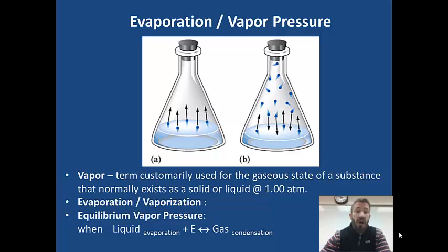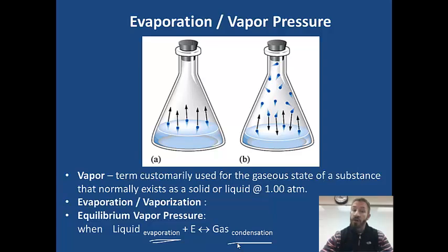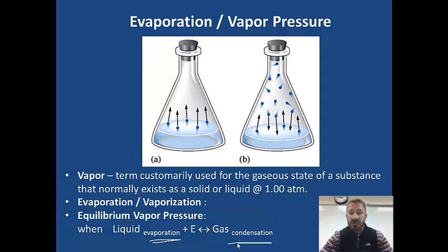We call that equilibrium vapor pressure. Equilibrium vapor pressure is when the rate at which liquid is evaporating equals the rate at which gas is condensing — those two rates are equal. Also, evaporation and vaporization actually mean the same thing: a liquid going into a gas, and that process occurs at a temperature below boiling.